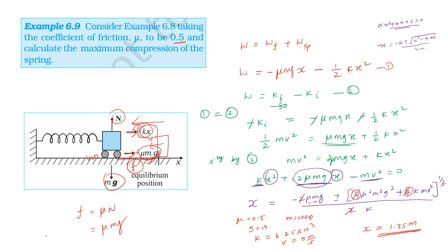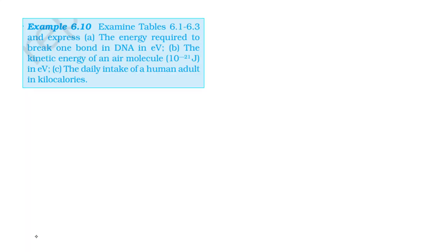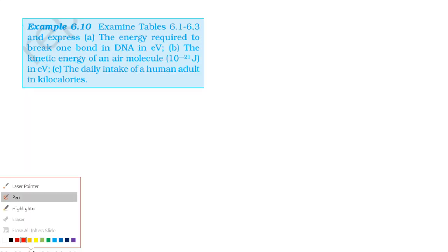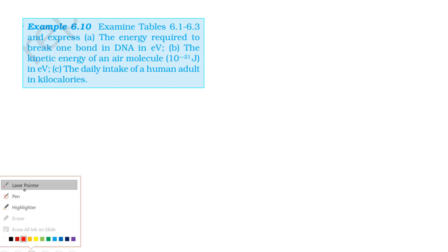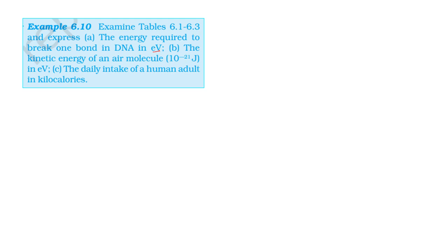The next question refers to table 6.3. Express the energy required to break one bond in DNA in electron volts, the kinetic energy of an air molecule of 10 power minus 21 joules in electron volts, and the daily intake of a human adult in kilocalories. Note that 1 joule equals 1.6 into 10 power minus 19 electron volts.